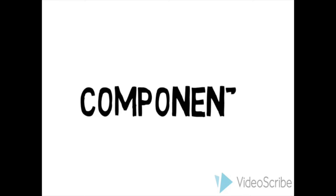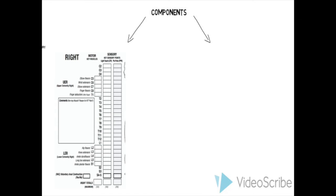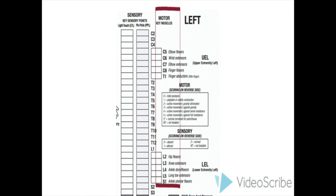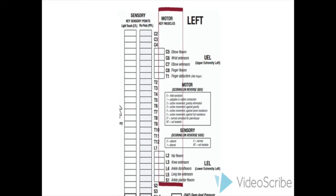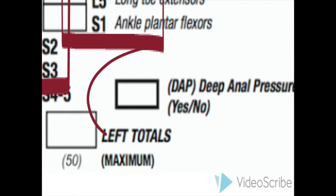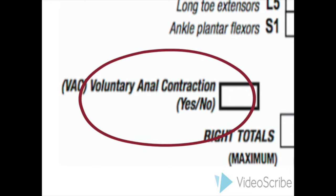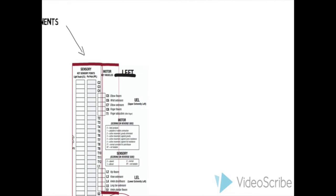When evaluating a patient using the ASIA Impairment Scale, both right and left sides of the body are tested. There are three main components: the motor exam, sensory exam, as well as the anorectal examination. Unlike neurological examinations in other settings, the examination to determine the ASIA Impairment Scale is performed while the patient is supine.